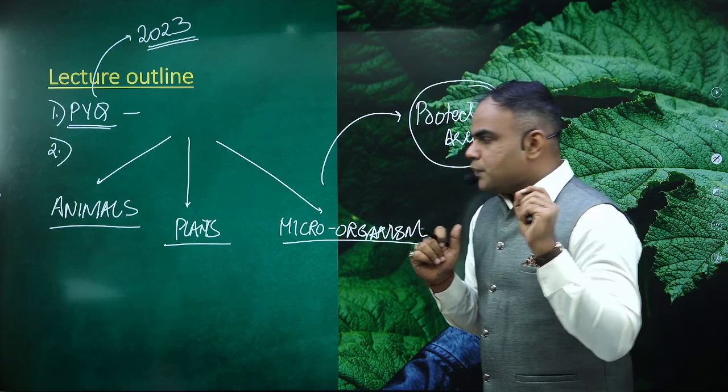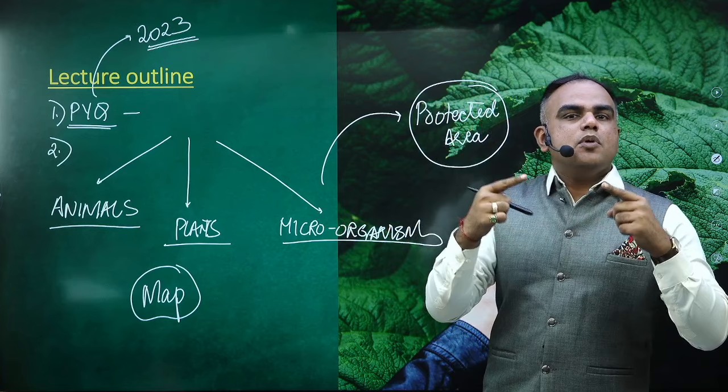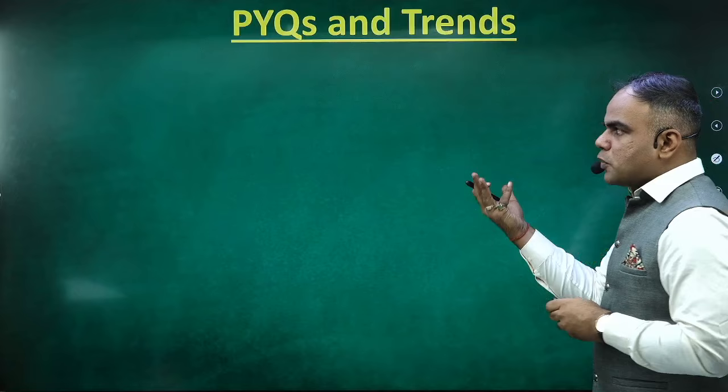At the end, I will also tell you how to consolidate your species knowledge. You should have a map of India, and after every lecture, you should map all the species mentioned. Slowly and steadily, this will help you build a good visual memory.